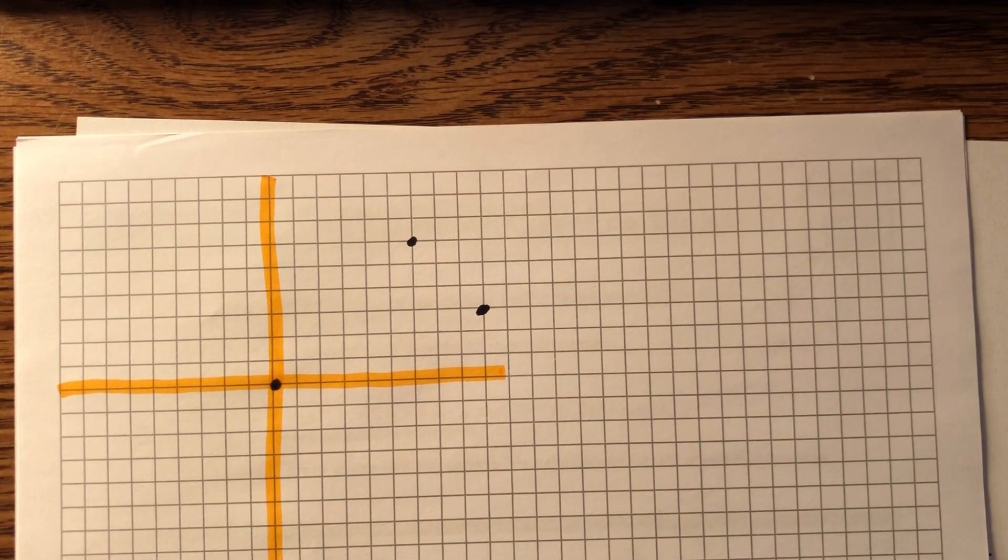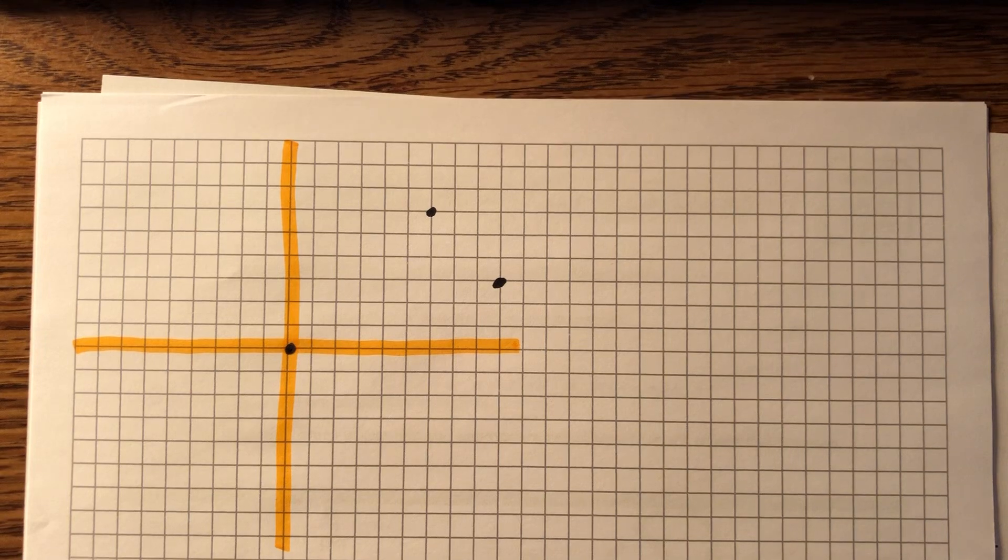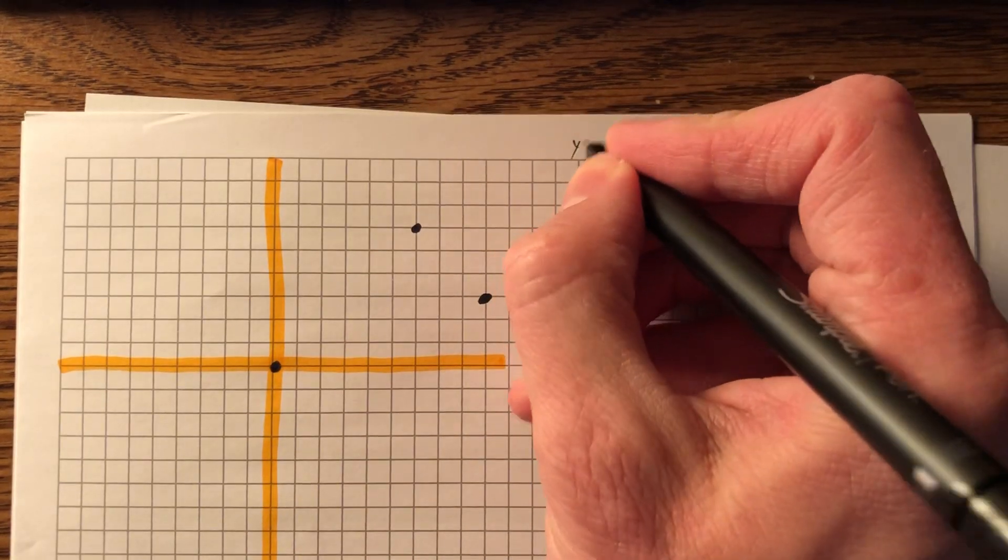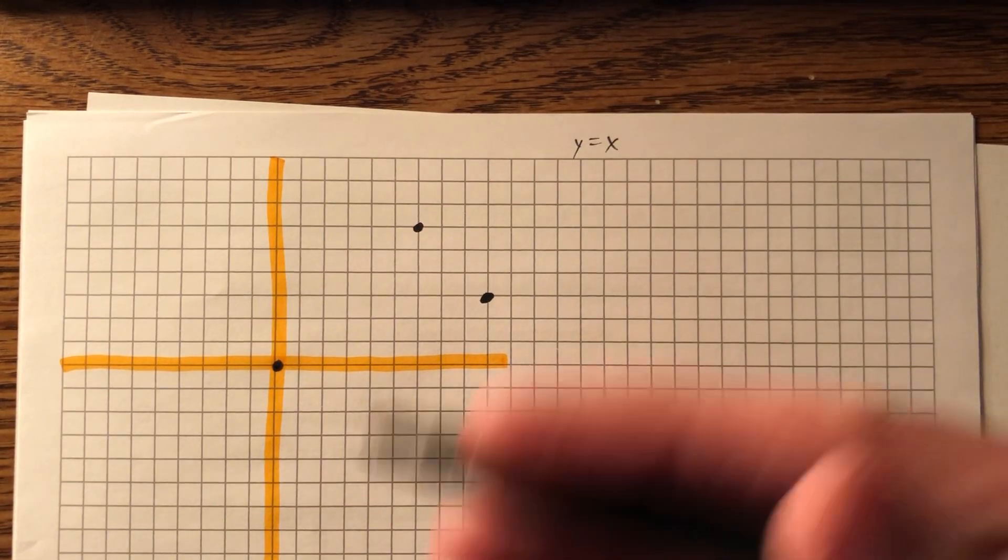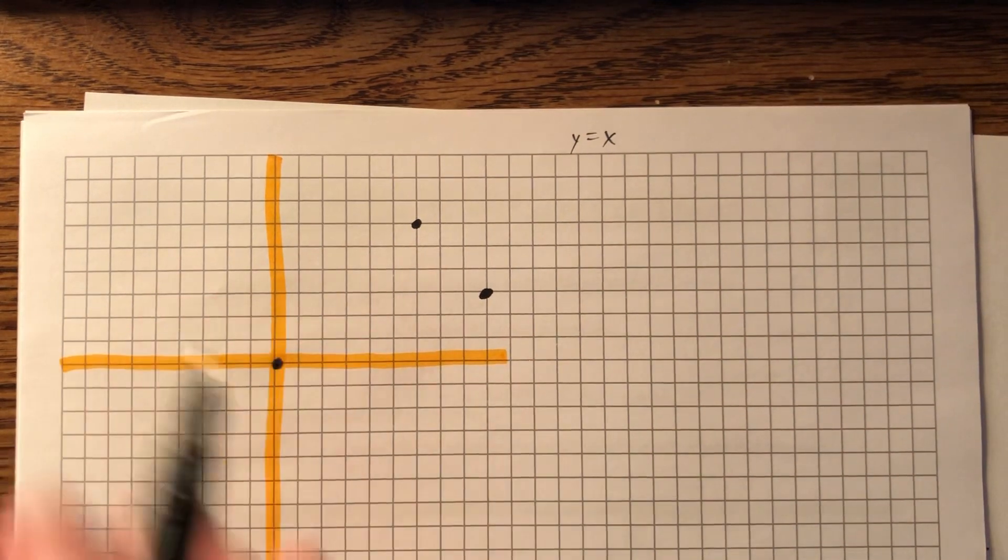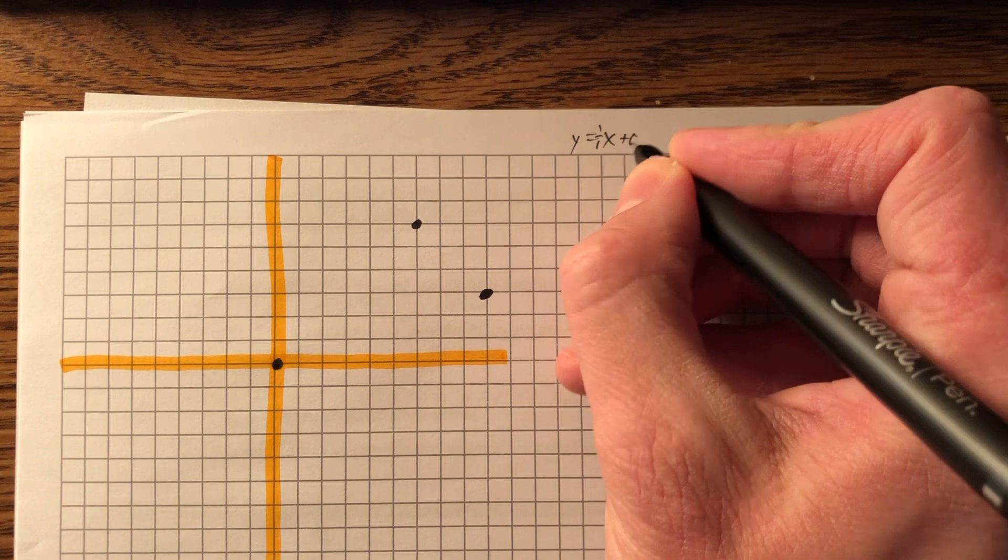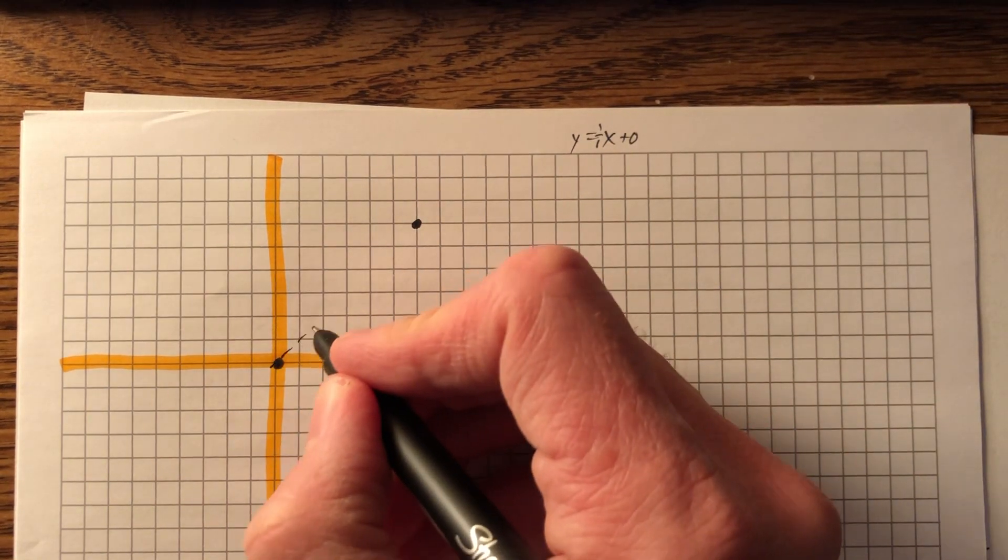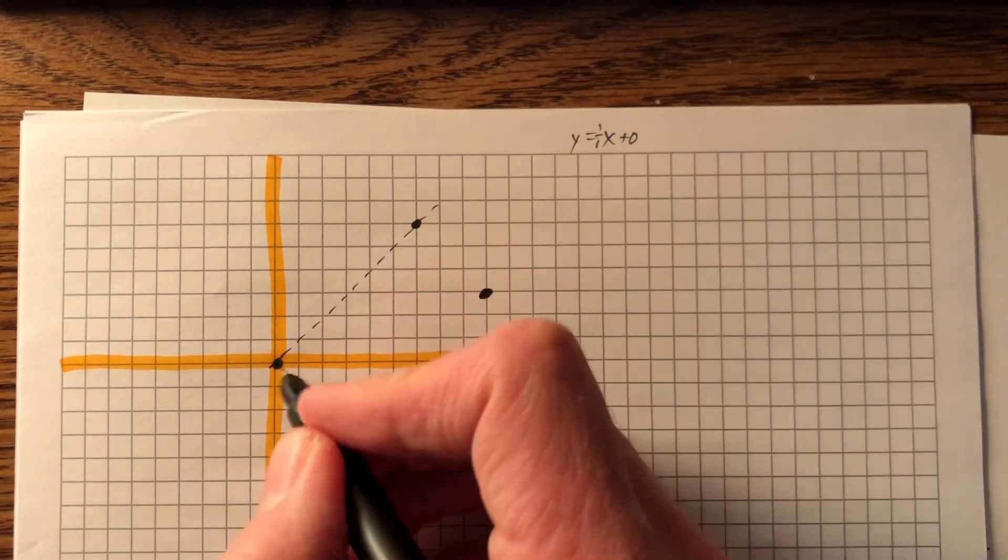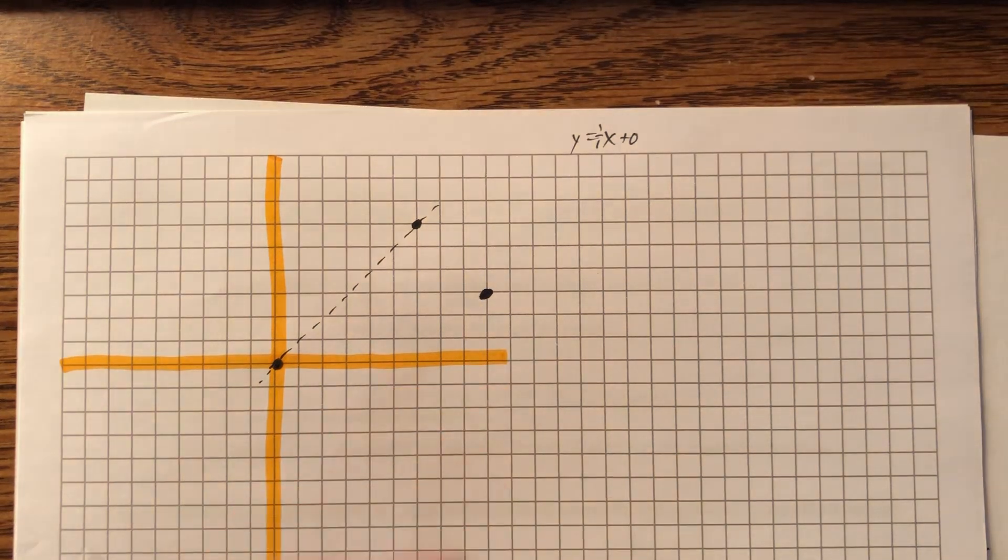And we're going to rotate this around the line y equals x. Whoa, what's the line y equals x? Don't think too hard. You got this. Y equals x. We're used to rotating things around the x-axis or the y-axis, but we're rotating it around this line. That line has a slope of 1 over 1 and a y-intercept of 0. So we're going to rotate it here.